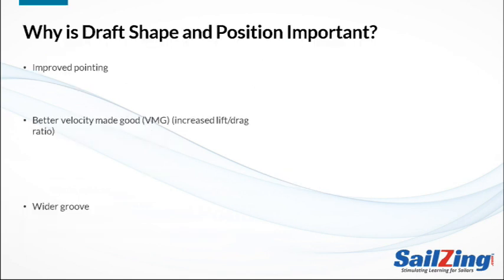Draft shape and position primarily affect three aspects of a sail's performance: pointing, overall performance as measured by velocity made good or VMG, and the width of the groove. If you want to point higher, the sail should have a flatter entry with the draft aft. You can also hook the leech closed for even more pointing.